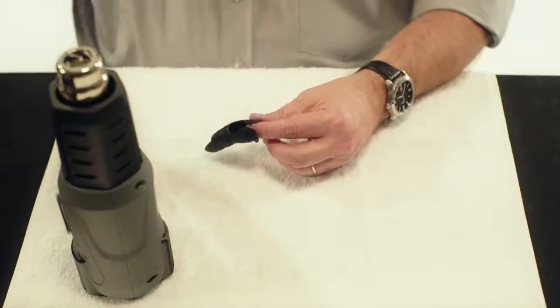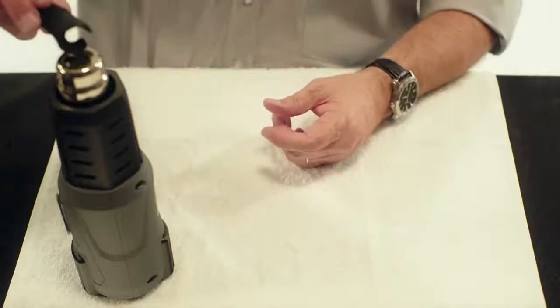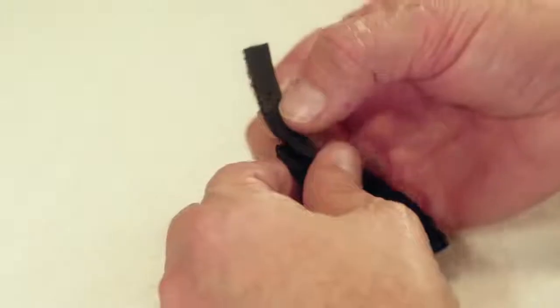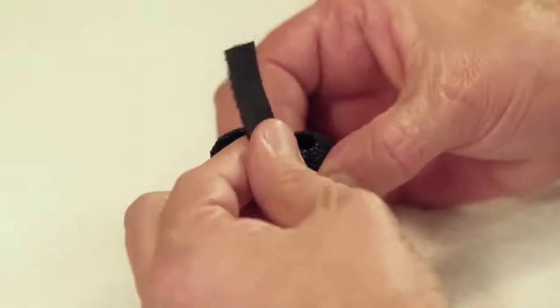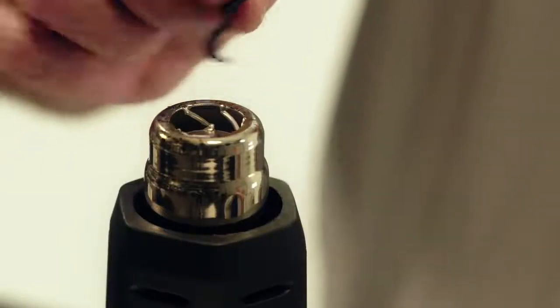To attach the Velcro loop directly to the orthosis, heat the Orficast material and adhere the Velcro loop. Secure it by heating a small piece of Orficast with the heat gun and stick it on the edge of the Velcro loop.